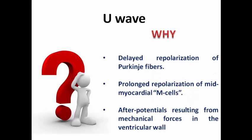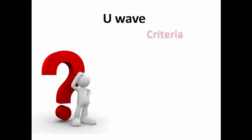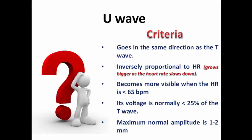So what's the cause of this U wave? It has many explanations like delayed repolarization of Purkinje fibers, prolonged repolarization in the mid-myocardial cells (sometimes called M cells), or after-potentials resulting from mechanical force in the ventricular wall.